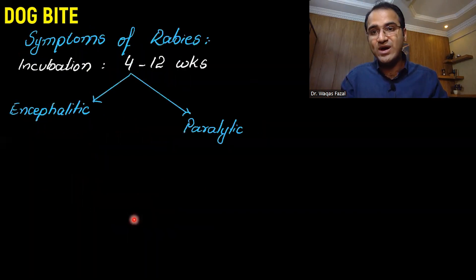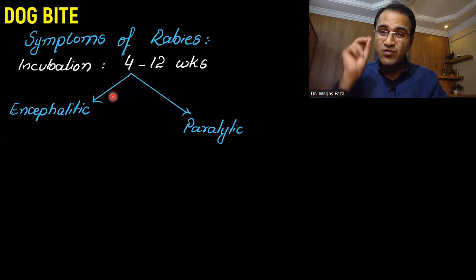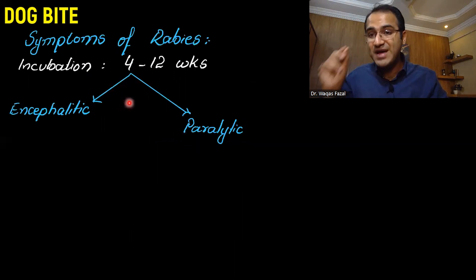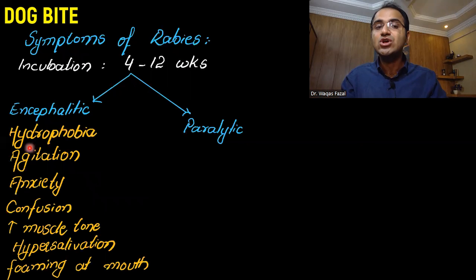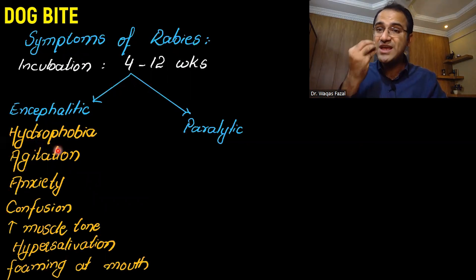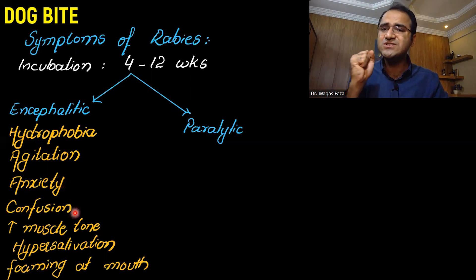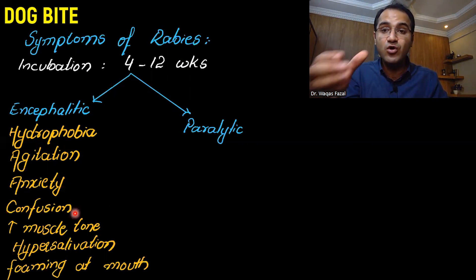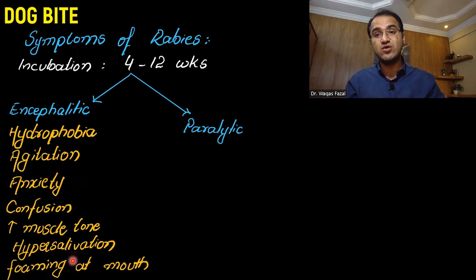Rabies virus is from the family of rhabdoviruses and the incubation period is from 4 to 12 weeks and can be up to a year. If someone gets infected with rabies, it can present in two forms. It is a very dangerous disease transferred by wild animals. It can have an encephalitic phase and a paralytic phase. In the encephalitic phase, the patient will have hydrophobia — fear of water — and won't be able to drink. There will be severe agitation, anxiety, confusion, increased muscle tone, and excessive muscle spasms. After giving water to drink, they will have excessive muscle spasms and gag reflex. There will be hypersalivation and foaming from the mouth.